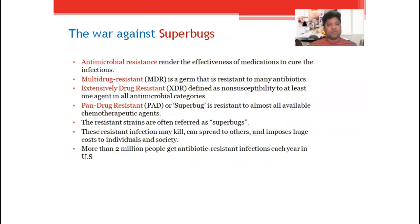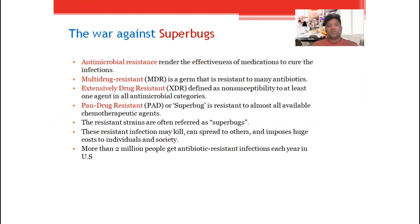Before moving forward, I would like to talk a little bit about superbugs with the resistant organisms. Antimicrobial resistance renders the effectiveness of drugs for medication to cure infections and kill bacteria. Multi-drug resistance is a germ resistant to many available antibiotics. Extensive drug resistance is defined as non-susceptibility to at least one agent in all antimicrobial categories. The last one is pan-drug resistance — the most dangerous category, also called a superbug — which is resistant to almost all available chemotherapeutic agents. The resistant strains are often referred to as superbugs.